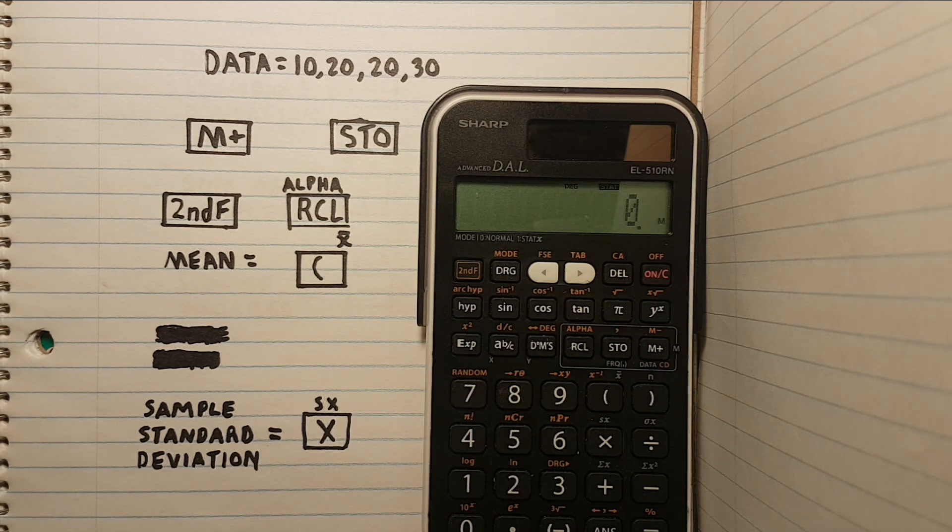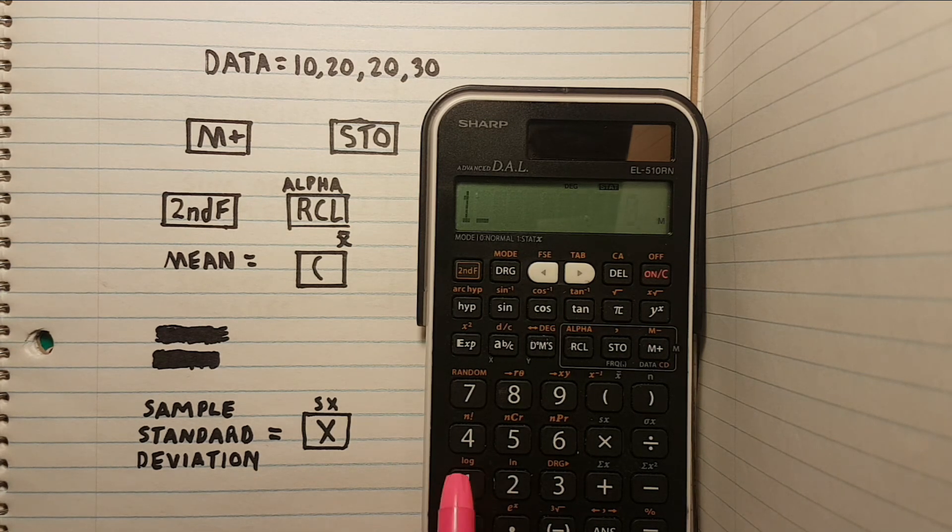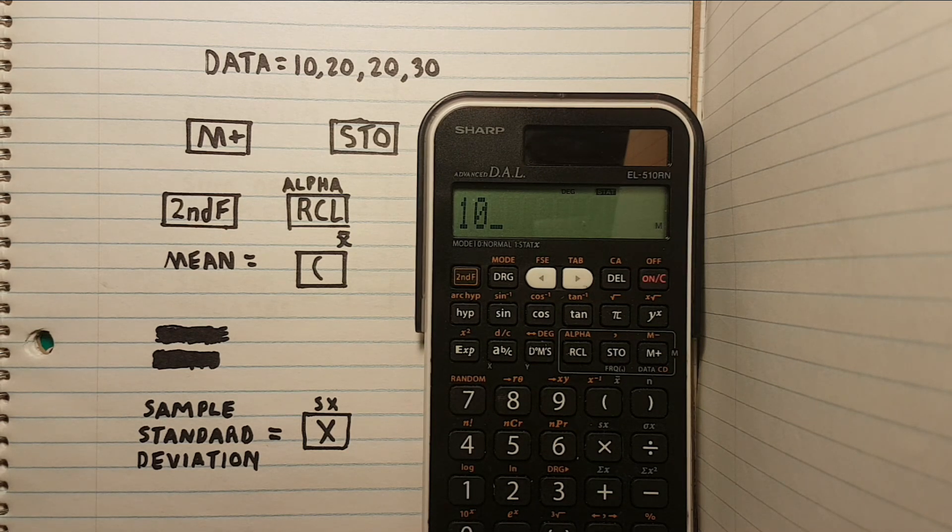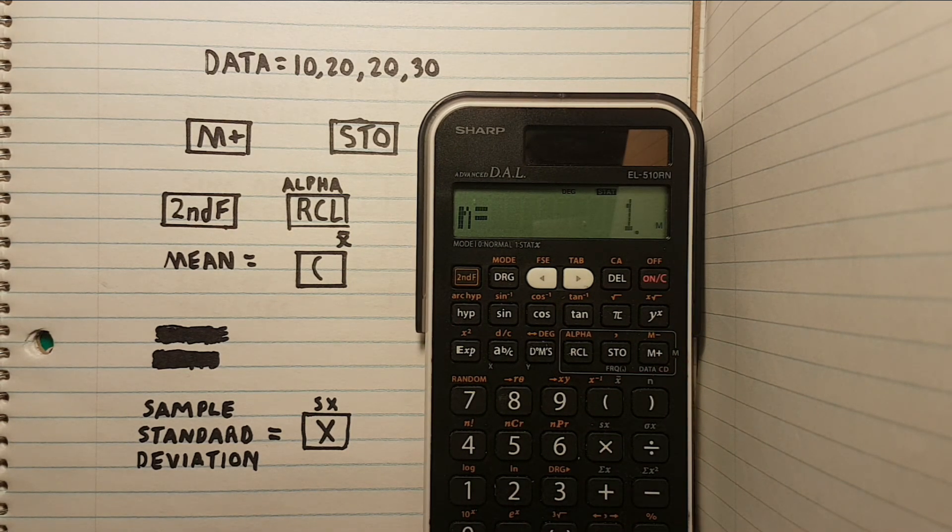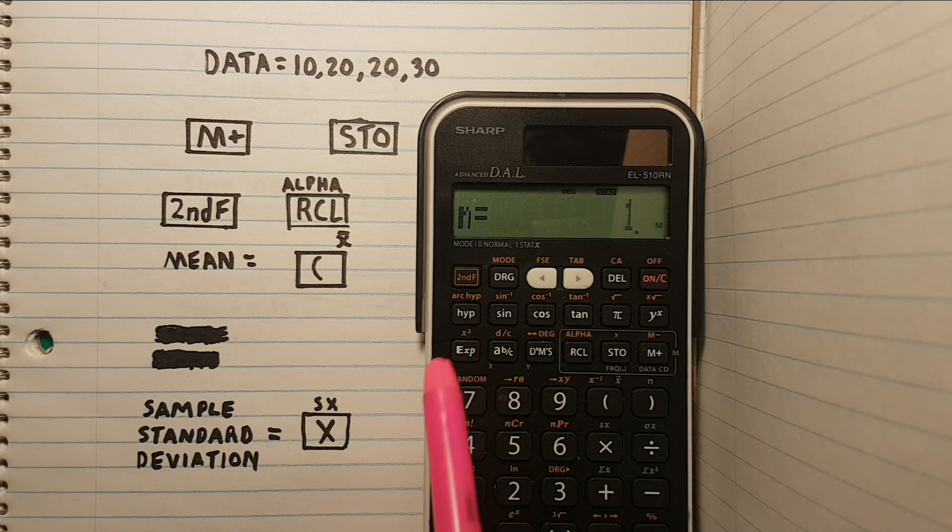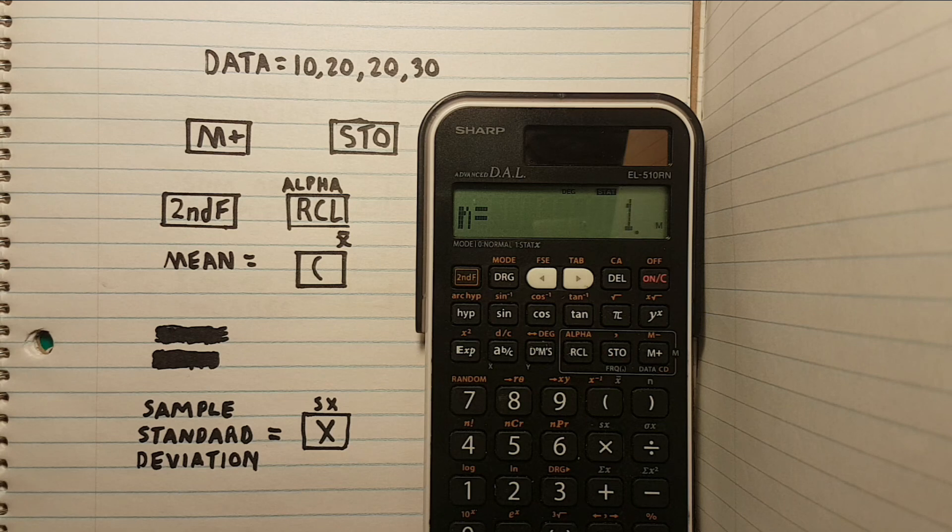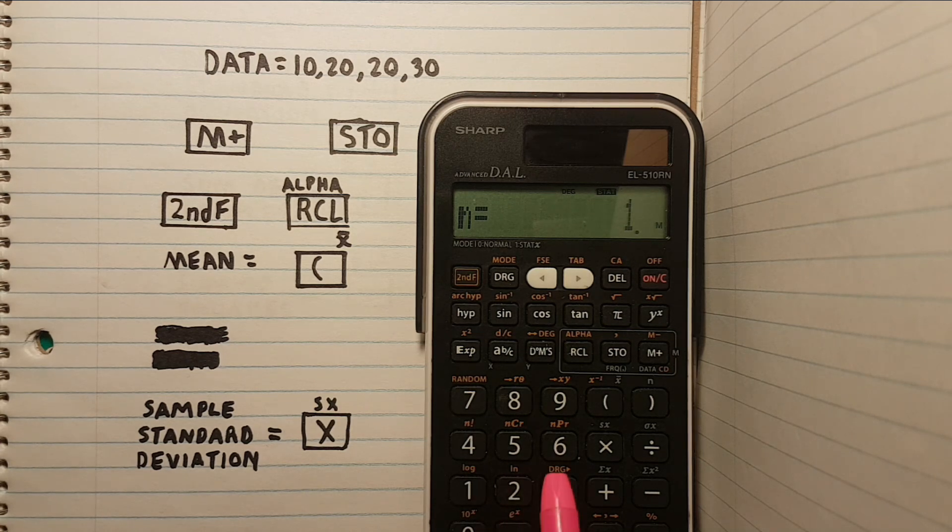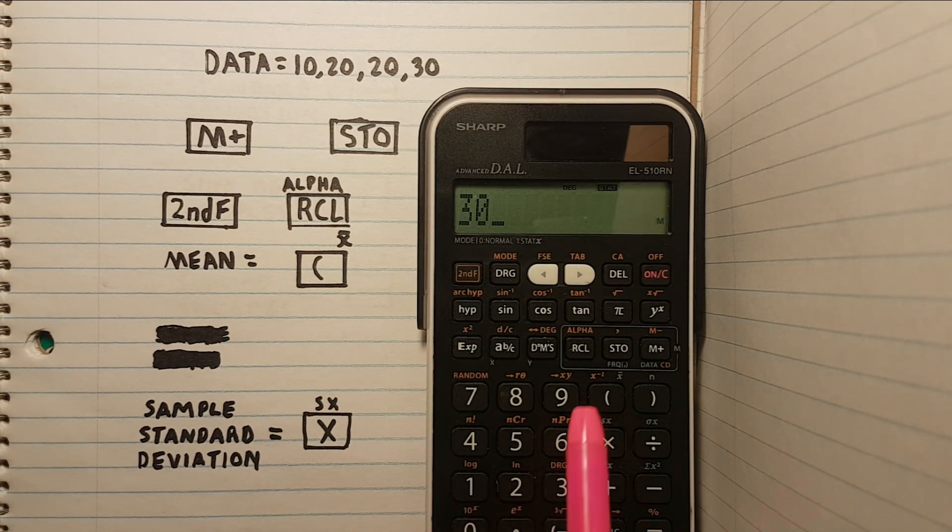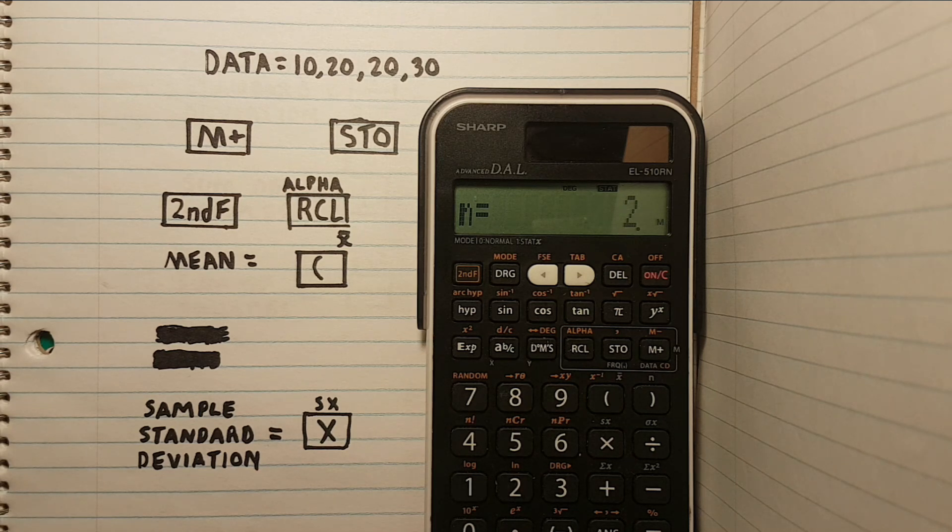We can begin by typing out our first measurement, 10, then pressing the M plus key to add it to our list of measurements. You can see N equals 1 on the screen. This tells us we have a total of one measurement in our data set. Let's enter the next measurement, 30. M plus. We now see we have two measurements in the data set.